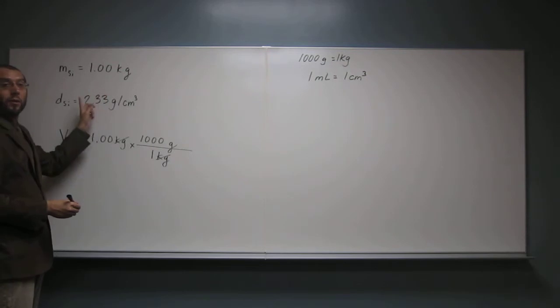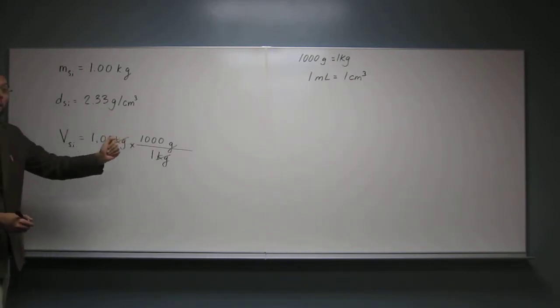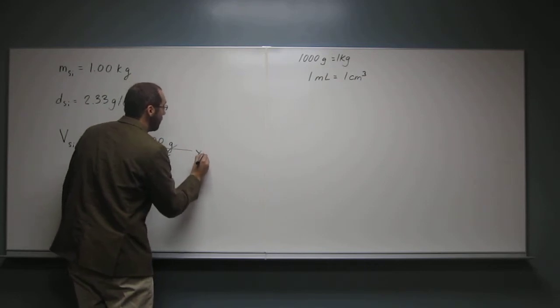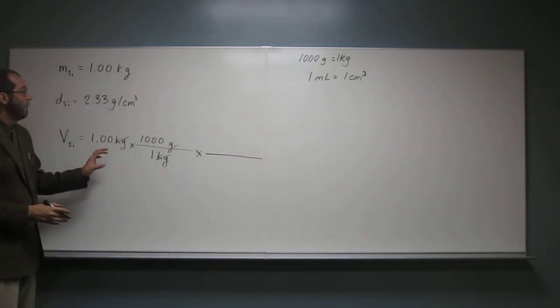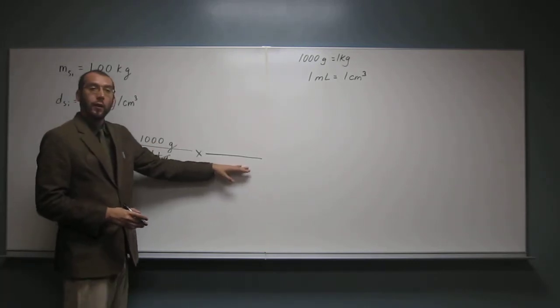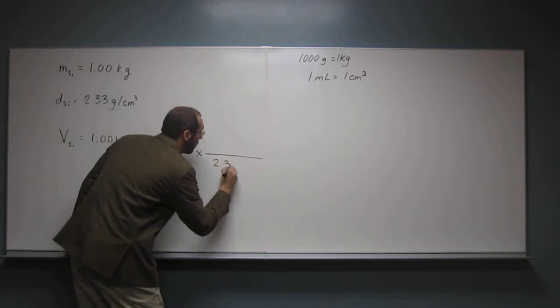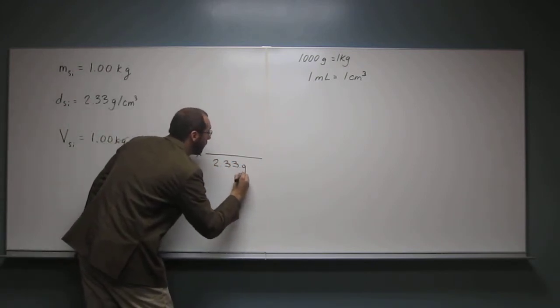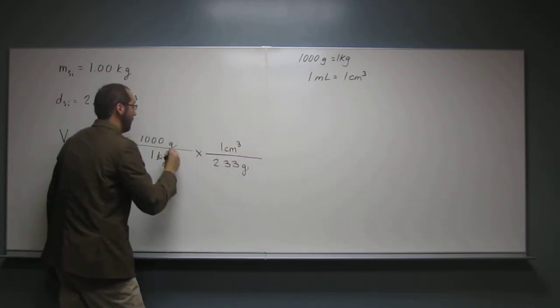So now we can use this conversion factor. Because remember, cubic centimeters, that's a volume unit too. But we don't want it in cubic centimeters, we want it in milliliters. So now we're going to multiply by, well, if we want the volume in cubic centimeters and we want to get rid of grams, well, what are we going to put down here? Grams. Grams, okay? So that's going to be 2.33 grams per one cubic centimeter, like that.